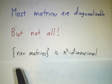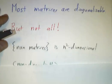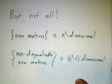The space of all n by n matrices is n² dimensional. It turns out that the space of non-diagonalizable n by n matrices is (n²-1) dimensional. So if you pick a random matrix, it's almost certain to be diagonalizable. But if you pick a one parameter family of random matrices, somewhere along the way, there's a good chance that you'll run into a non-diagonalizable one.